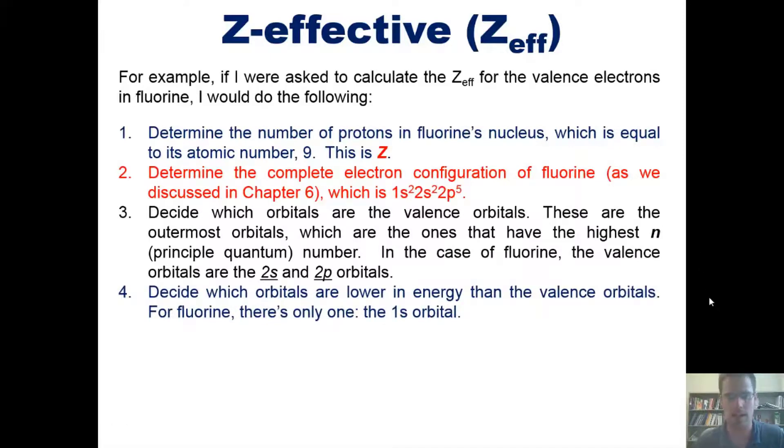Four, decide which orbitals are lower in energy than the valence orbital. For fluorine, there's only one lower energy orbital, the 1s orbital. That orbital, by the way, the lower energy orbital, is the one that's closer to fluorine's nucleus and smaller than the 2s and 2p orbitals, which are further out.